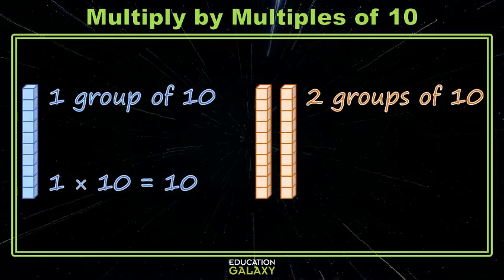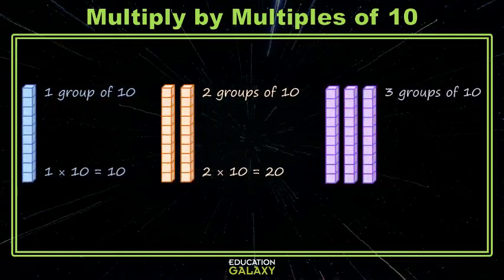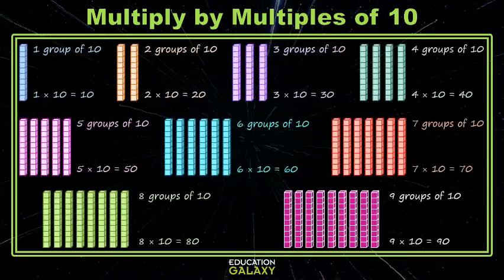We can write that as two equal size groups of 10, or 2 times 10, which gives us 20 of those little cubes. And if we go to three groups of 10, we have 3 times 10, which gives us 30 of the little cubes. And so on for all of your friends being multiplied by 10.